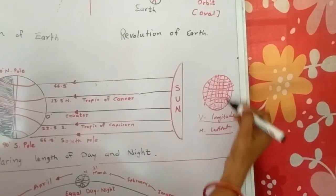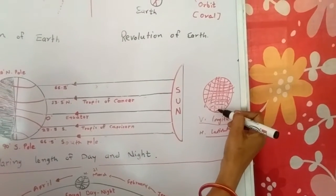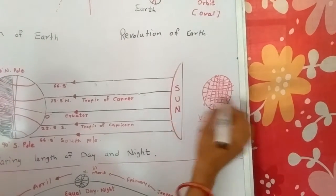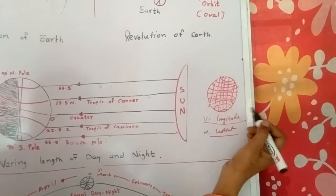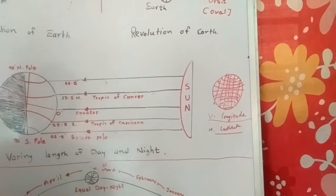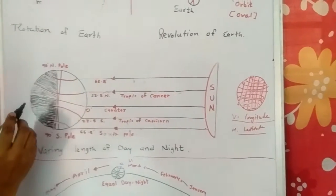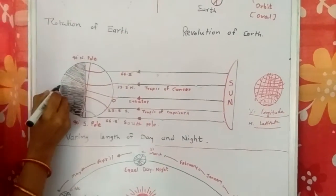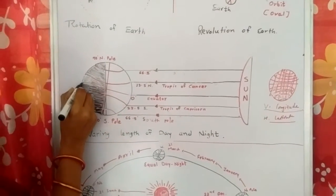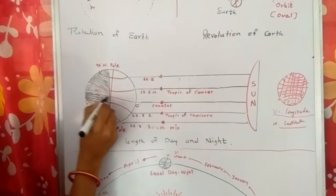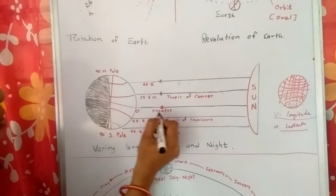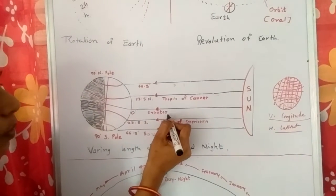The vertical imaginary lines on the earth are called longitude, and the horizontal imaginary lines are called latitudes. The line which is in the center of the earth is called the equator.